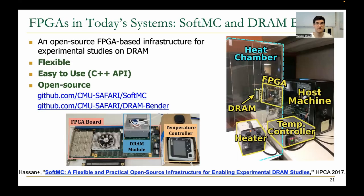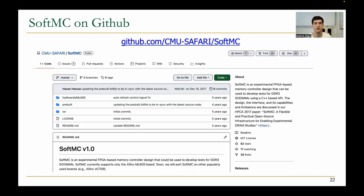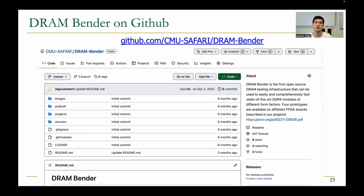Beyond acceleration, FPGAs are also useful in developing infrastructure for testing. SoftMC and DRAM Bender are open-source FPGA-based DRAM testing infrastructures developed in Safari. We use these to develop further understanding of DRAM reliability, security, and performance. SoftMC is open-sourced on GitHub, and the more recent version, called DRAM Bender, is also open-sourced at this link.